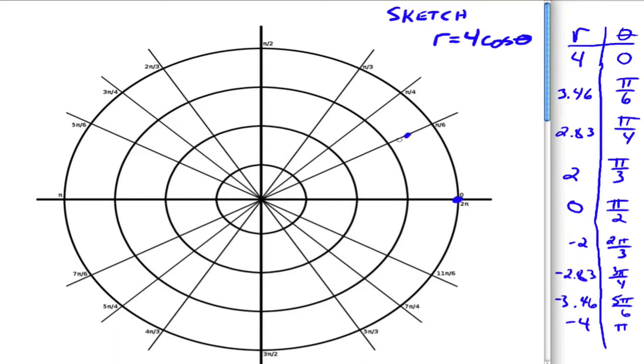And at pi over 4, we're at 2.83. So 1, 2, so we're like up here. At pi over 3, we're at 2. And at pi over 2, we're back at 0.